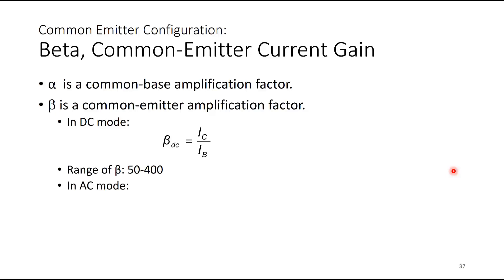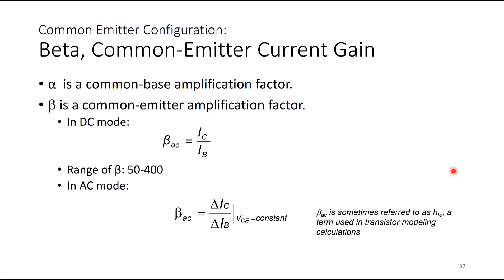In AC mode, β_AC can be found by the change in IC with respect to the change in IB at a constant VCE. Beta AC is sometimes referred to as h_FE, which is a term used in transistor modeling calculations that you may encounter in higher-level courses.